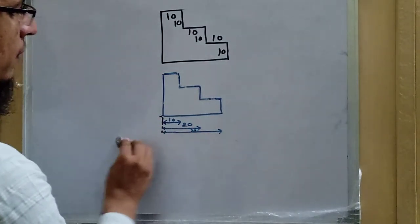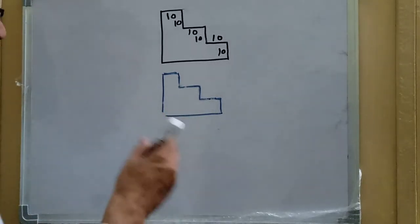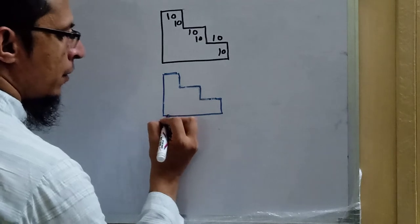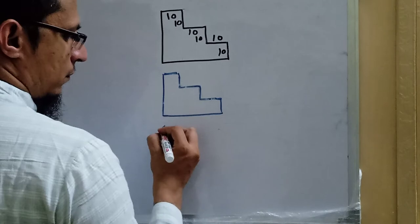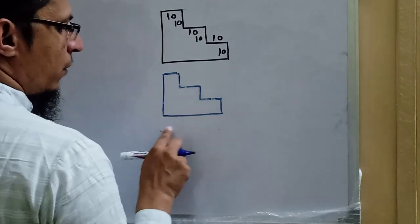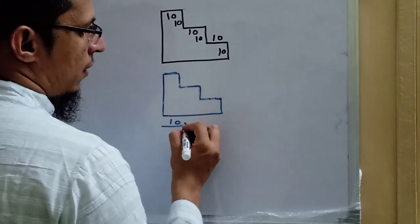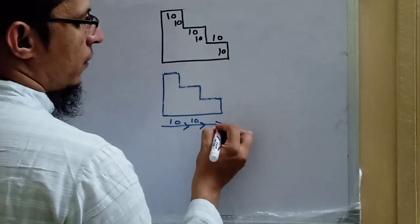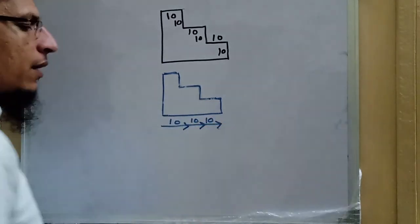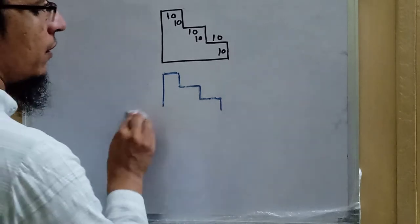The next type is progressive dimensioning. In progressive dimensioning, the arrows move in only one direction — this is 10, then again 10, and 10 here. We progress in one direction for the dimensioning, so this type is called progressive dimensioning.